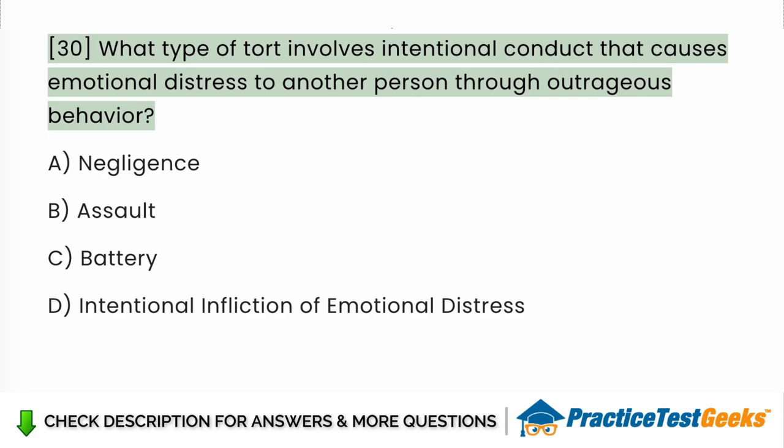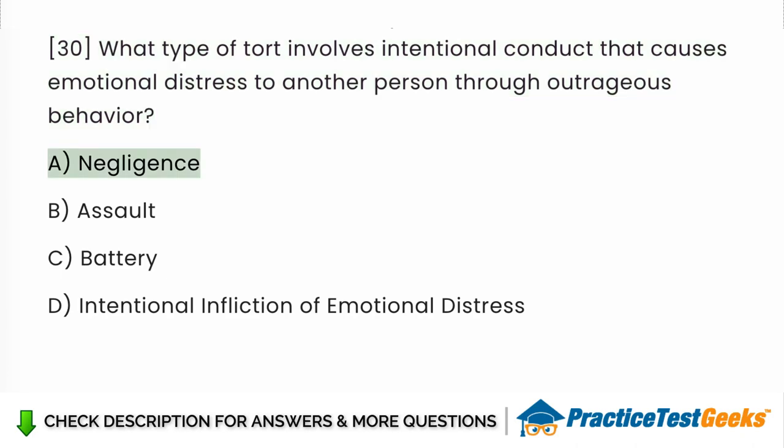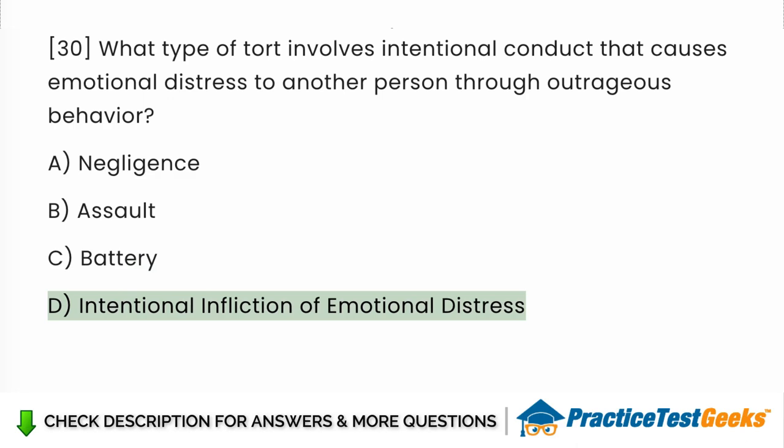What type of tort involves intentional conduct that causes emotional distress to another person through outrageous behavior? a. Negligence. b. Assault. c. Battery. d. Intentional infliction of emotional distress.